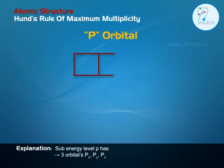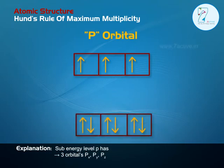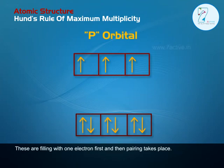Explanation: The subenergy level p has three orbitals px, py, and pz. These are filled with one electron first and then pairing takes place.